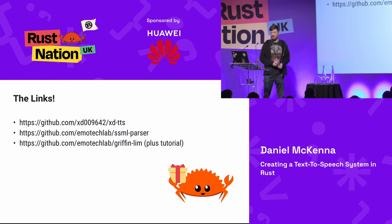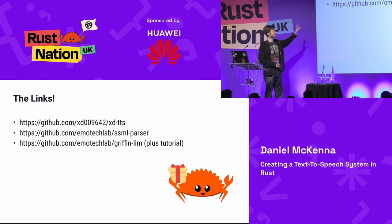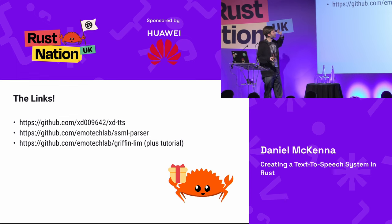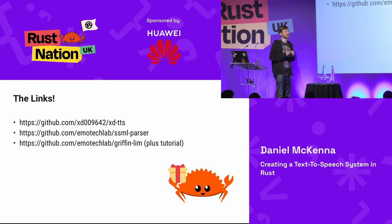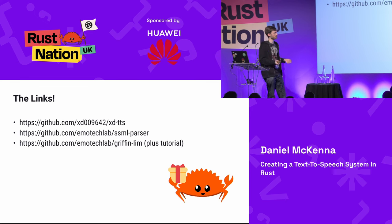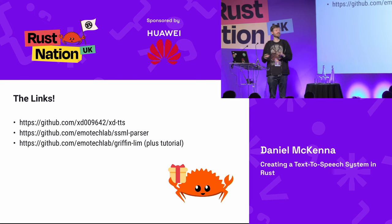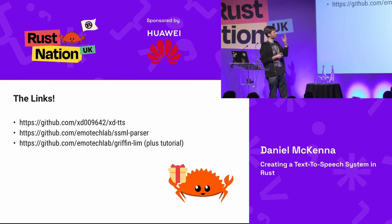Now the links. On my own repo I've called it XD TTS because I'm bad at naming things. On the Emotech Lab repo, we have the SSML parser — there are lots of crates for writing SSML but actually no crates for parsing it, and very few open source libraries for parsing it, because no one likes writing libraries to parse XML standards and you're only interested in it if you're making a TTS system. We've open sourced this, and we've also open sourced the Griffin-Lim stuff plus a tutorial.